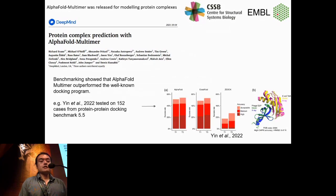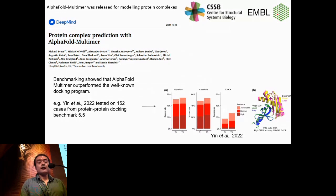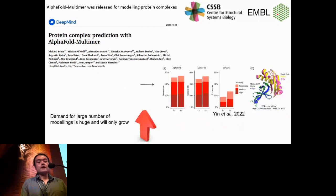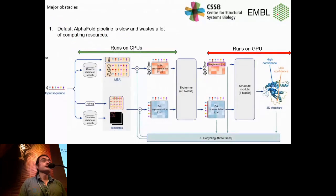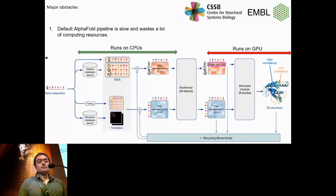AlphaPulldown was released in late 2021, and immediately after release there has been increasing interest in folding a huge number of protein complexes using it. Benchmark studies showed that AlphaFold Multimer surpassed all previously developed docking software and became almost a de facto modeling tool for predicting protein complexes. I foresaw that demand for large-scale modeling using AlphaFold Multimer was already huge and would only grow.